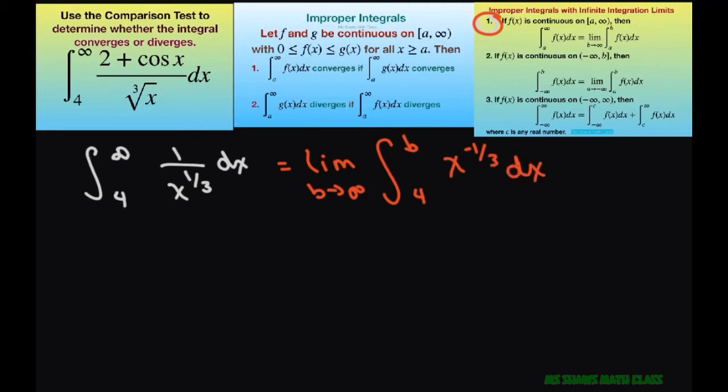Now we can integrate this and we're going to get the limit as b approaches infinity. To integrate this, you're going to get 3 halves x to the power of 2 thirds, and we're evaluating this from 4 to b.